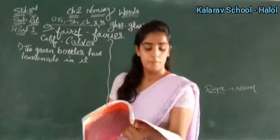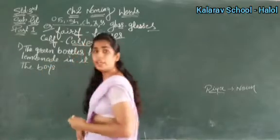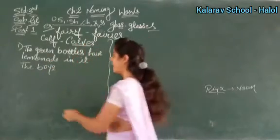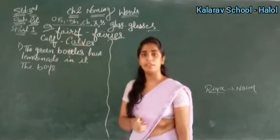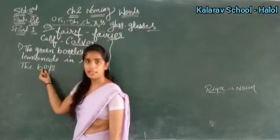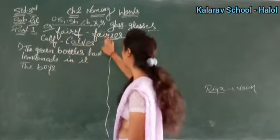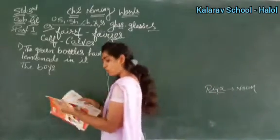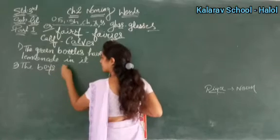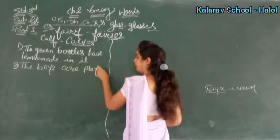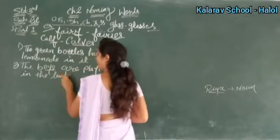Second sentence: 'The boy is playing in the tent.' Ab yahan sochoge ki Y hai toh Y hatao aur IES lagao — but wait. Agar Y se pehle vowel aata hai — A, E, I, O, U — toh sirf S lagayenge. Boy mein O-Y hai, O is a vowel, so: the boys are playing in the tent. 'Is' ki jagah 'are' aayega.